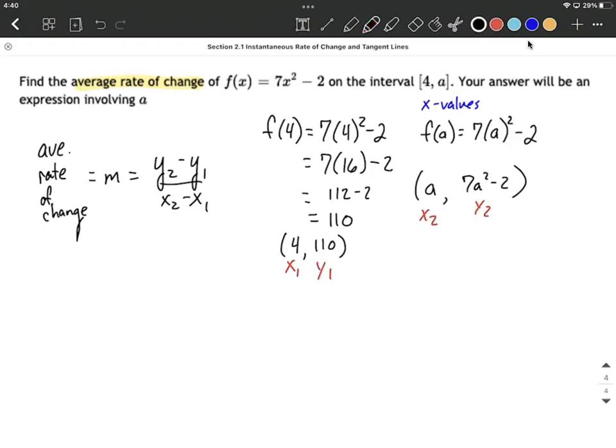Filling into that average rate of change formula, or the slope formula, let's take a look at what this is going to give us. We have 7A squared minus 2, y value, minus 110, y value from the other ordered pair, divided by A minus 4.